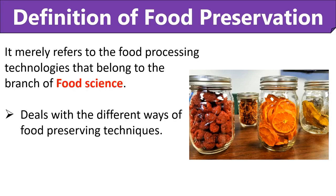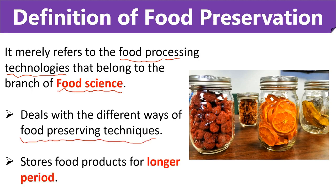Food preservation mainly involves food processing technologies that keep the food color, texture, flavor, and nutritive value intact. Food technology is a branch of food science which deals with the study of various food preserving techniques. Food preservation methods also increase the longevity or shelf life of different food items.